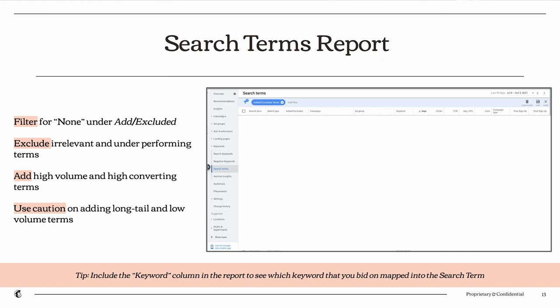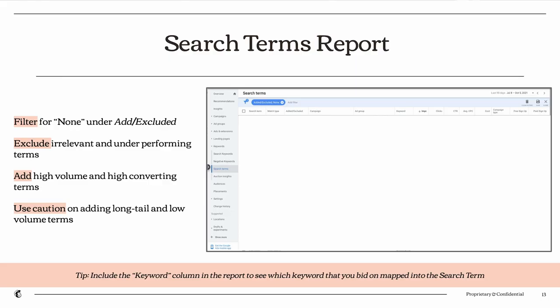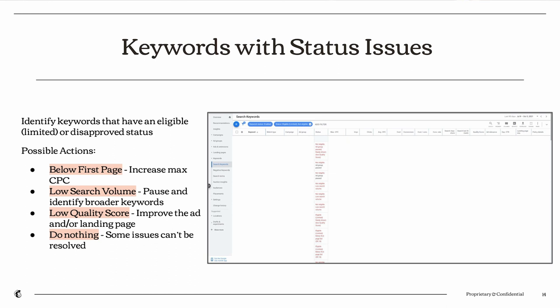One additional tip: manually add the keyword column in the search terms view. This tells you which keyword you're actively bidding on is mapping to which user search term on the Google results page. It helps you quickly spot mapping issues. You should also check keyword statuses by filtering for eligible, limited, and disapproved statuses in Google Ads to see which keywords need action.